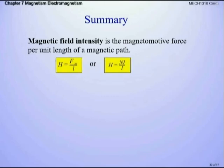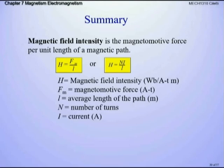Summarizing magnetic field intensity: we have two formulas. The magnetomotive force F_N divided by length L gives us magnetic field intensity H, also called hysteresis. Since F_N = N × I, we can write H = N × I / L. This calculates our magnetic field intensity — the effort the given current puts into establishing a flux density in the material. It's how strong the overall magnetic field is, not just the flux lines.